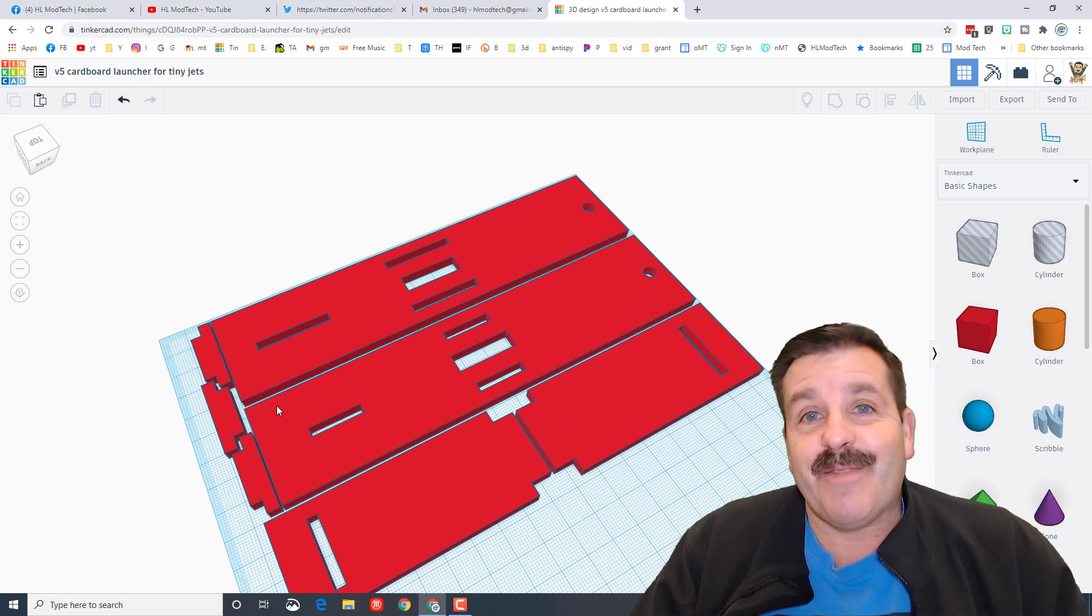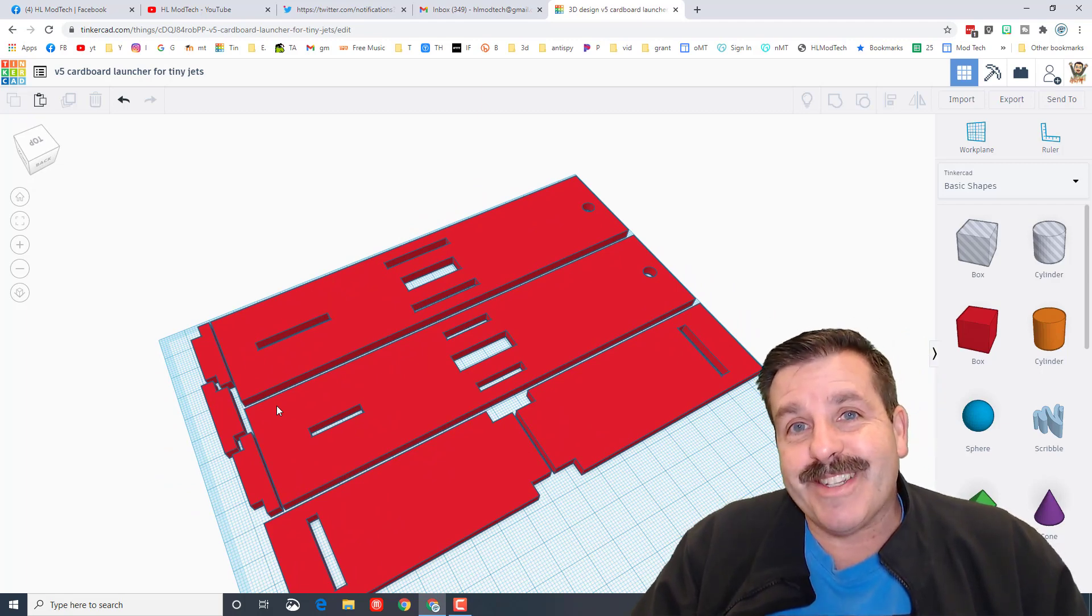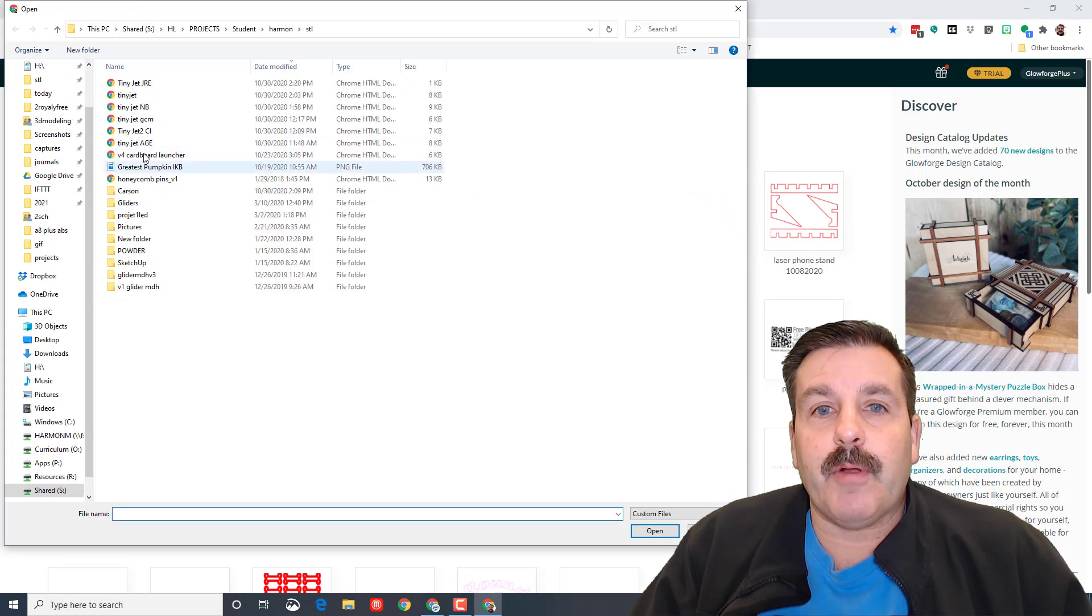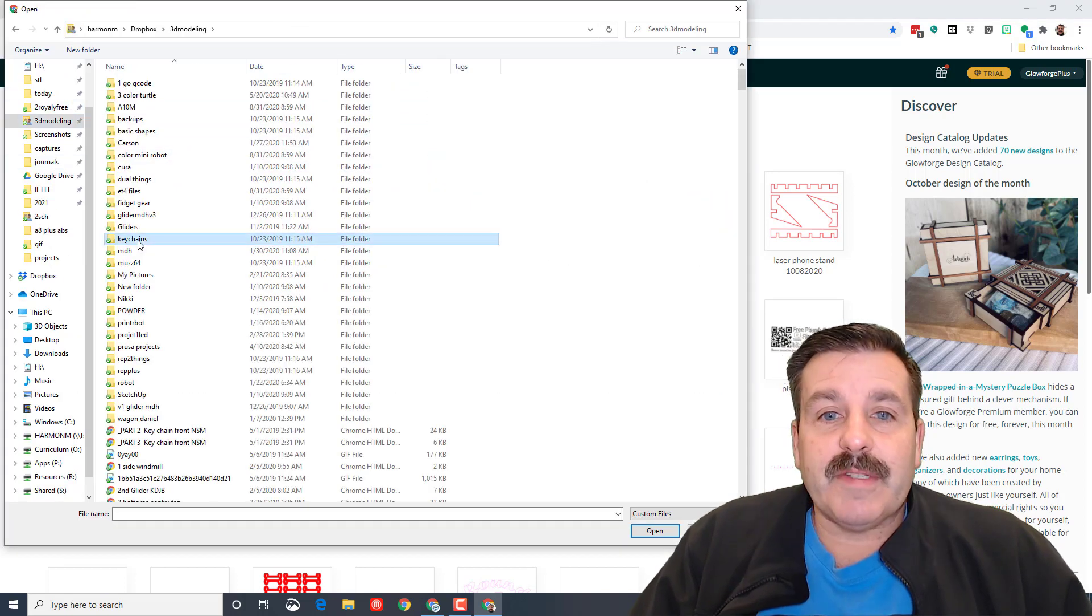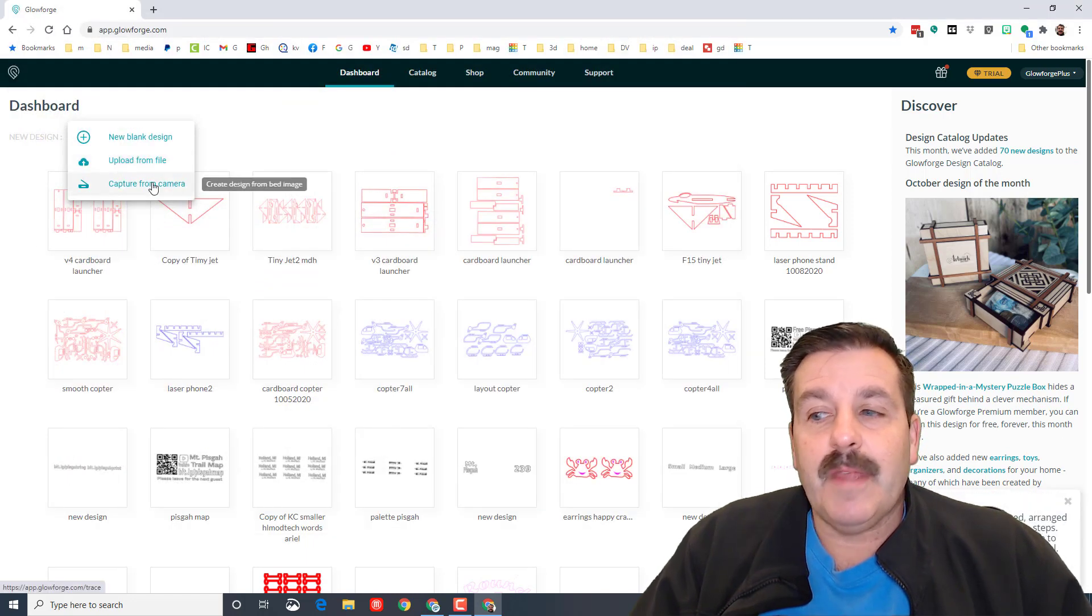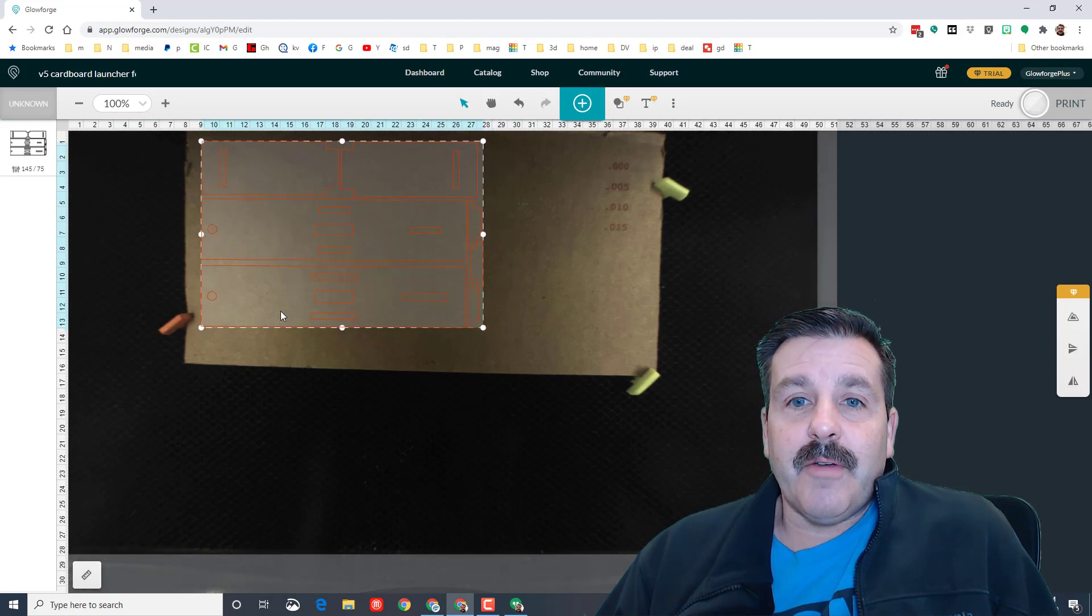So I went in and made some modifications. It's time for us to send it to the Glowforge. This file will be available on Thingiverse right now. I'm gonna upload it from my system. I've always got mine stored in my keychain folder. There is the v5 file. Let's let it upload and see how it looks.